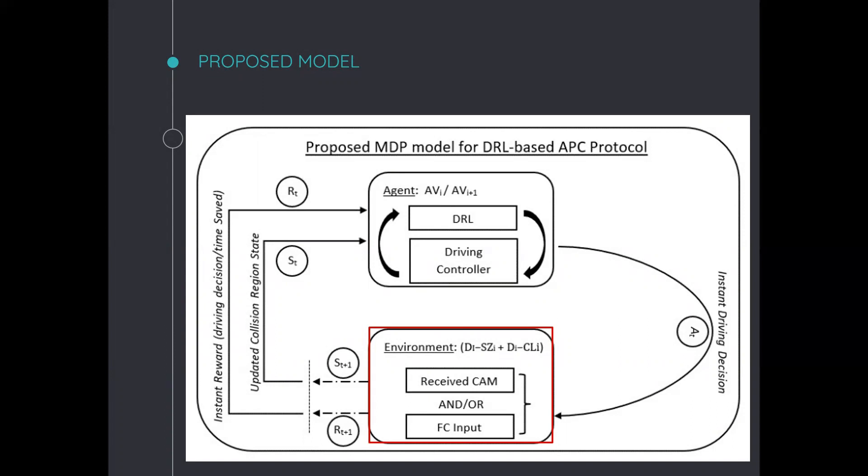It will sense this region either by sensing directly using the front camera or through analyzing the received cooperative awareness messages received from VI or from the front vehicle. And consequently, based on the state ST, the agent will select an instant driving decision at time T plus one, that will minimize the travel delay according to APC protocol and thus it will maximize the reward RT plus one.